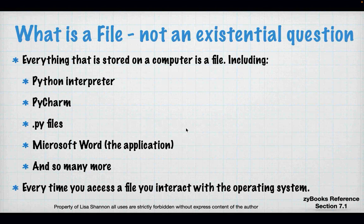What is the file? Everything is a file. Python interpreter, PyCharm, PY files, Microsoft — the operating system on my computer is a series of files. Those files happen to be executable and they run the operating system. But they're all files. Everything on most computers relies on storing files to disk.